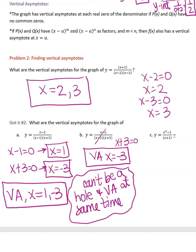On the last vertical asymptote example, factoring the numerator gives (x − 1)(x + 1), and there's an (x + 1) in the denominator — those cancel, giving a hole at x = −1. There's nothing left in the denominator, so this function does not have a vertical asymptote. Vertical asymptotes don't always exist, but most functions have them.